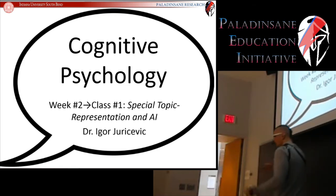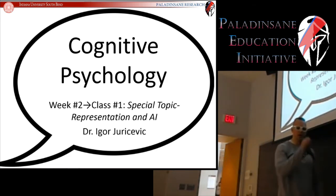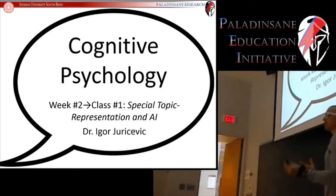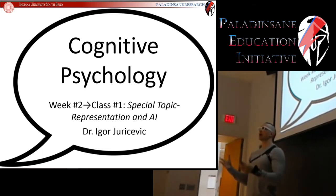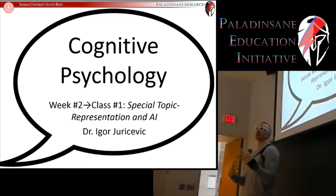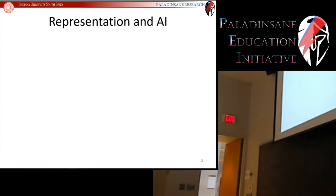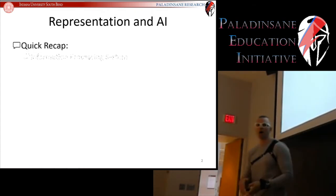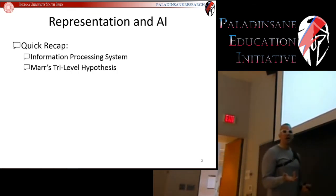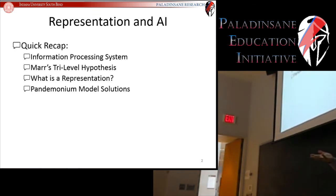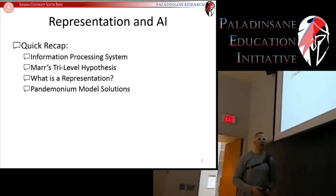Now we're going to continue on with our look at cognitive psychology. Today we're going to tackle a special topic — we're going to take another look at representation and apply it to the idea of artificial intelligence, and really get into how cognitive psychology views our minds. We'll have a quick recap on information processing systems, Marr's tri-level hypothesis, representations, and the pandemonium model solution. Then we're going to take a look at artificial intelligence and the physical symbol system hypothesis and the Turing machine.